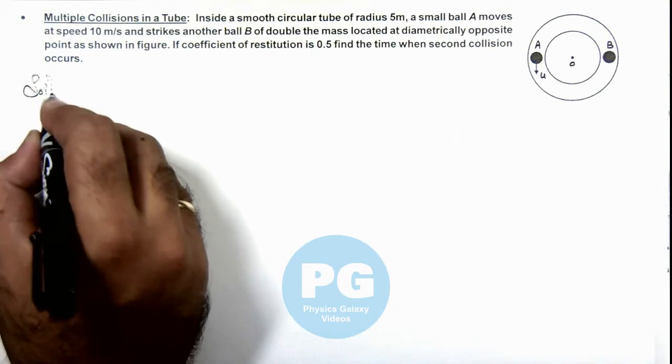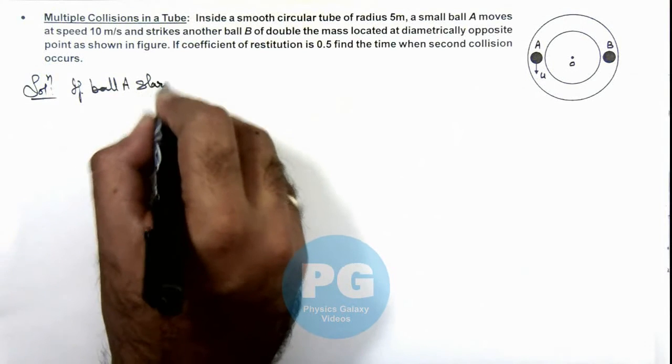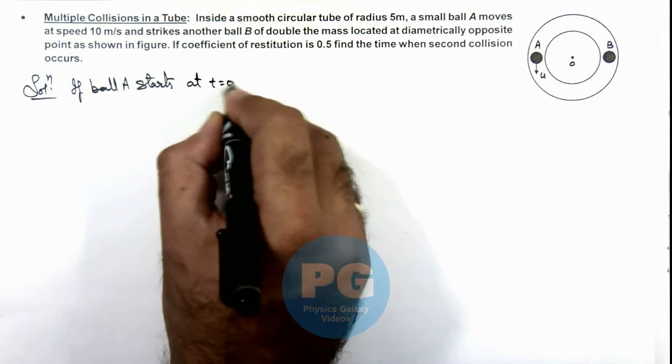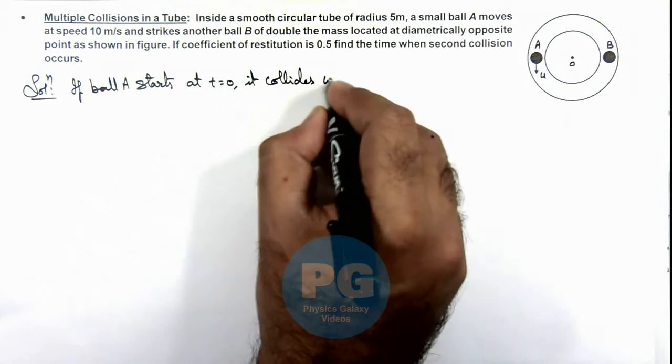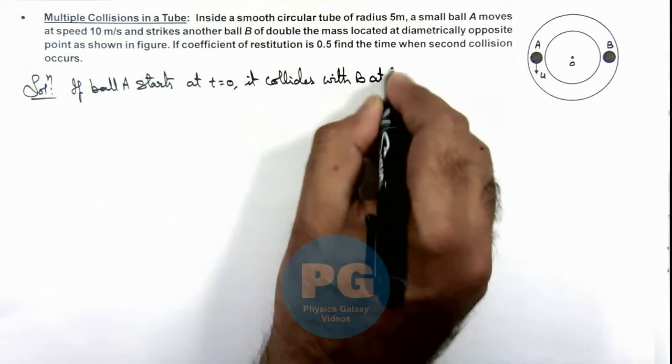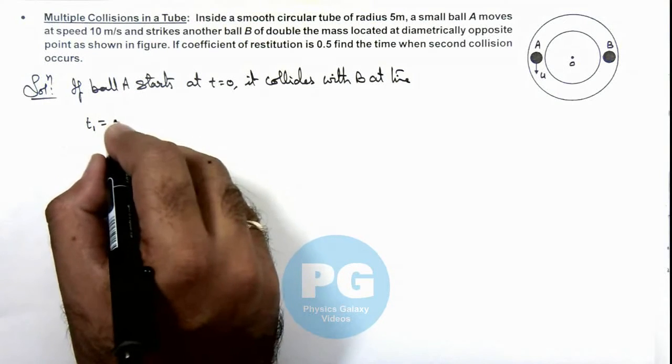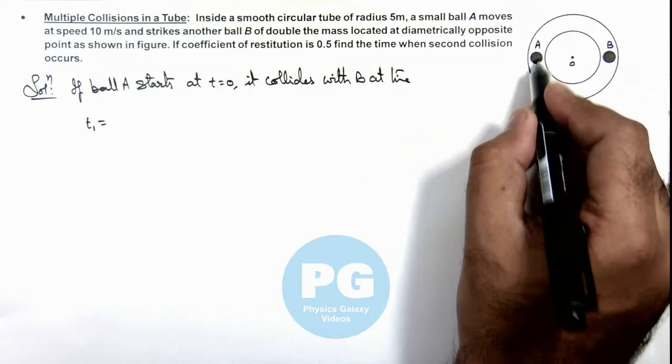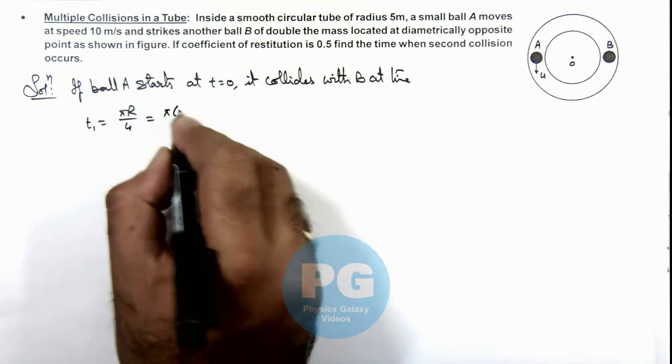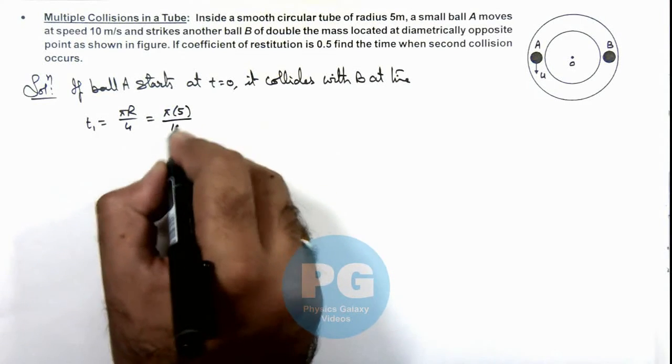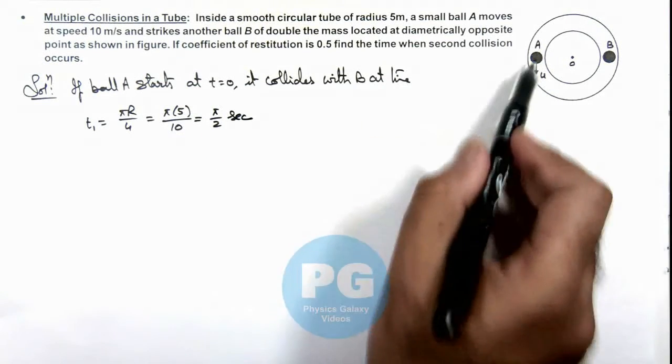First we can calculate if ball A starts at t equals zero, it collides with B at time t1. The time of first collision, t1, is the distance travelled by ball A divided by u, so this can be written as π r by u. This will be π times 5 divided by 10, so it is π by 2 seconds, the time taken by ball A to collide with ball B.